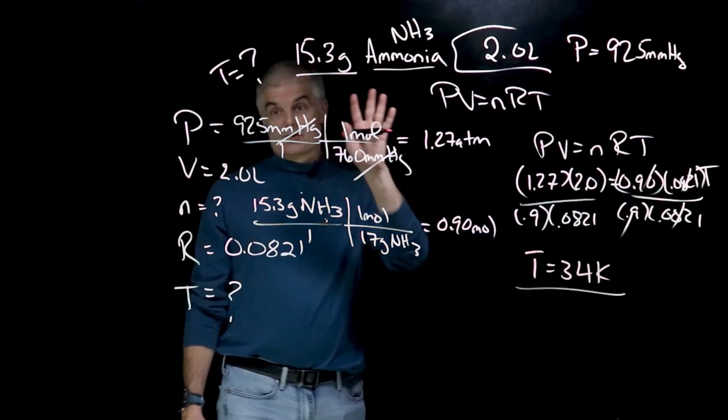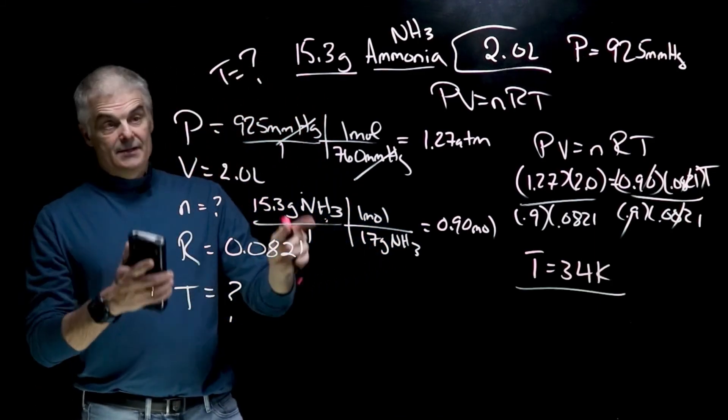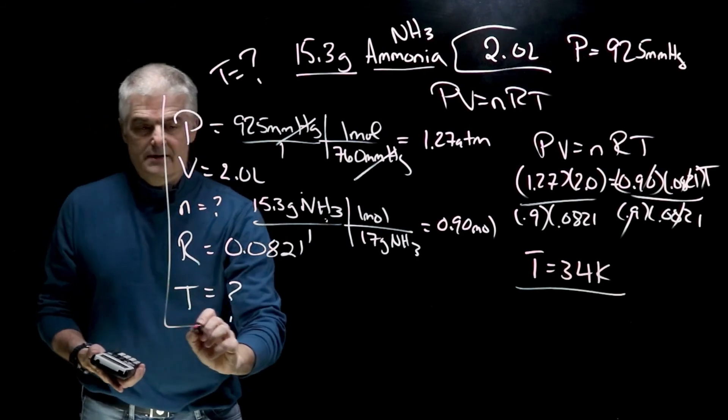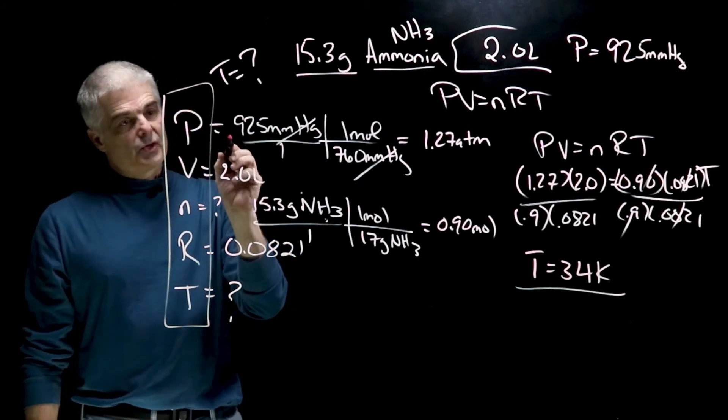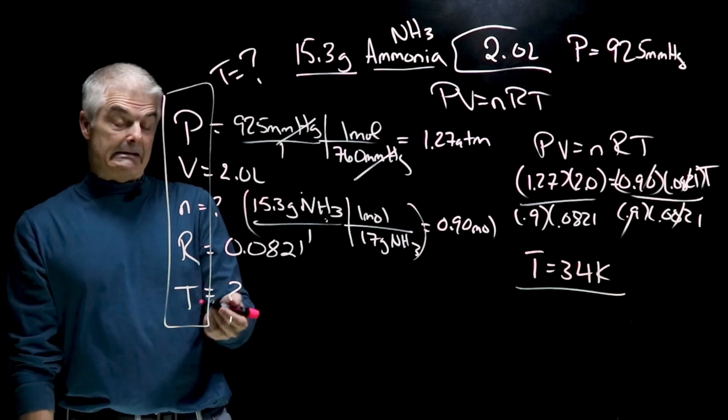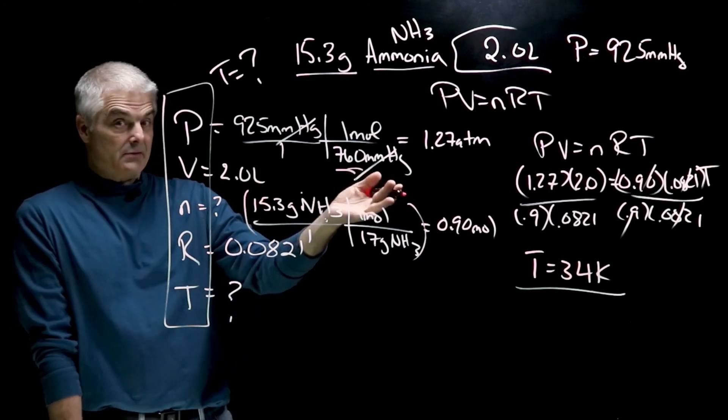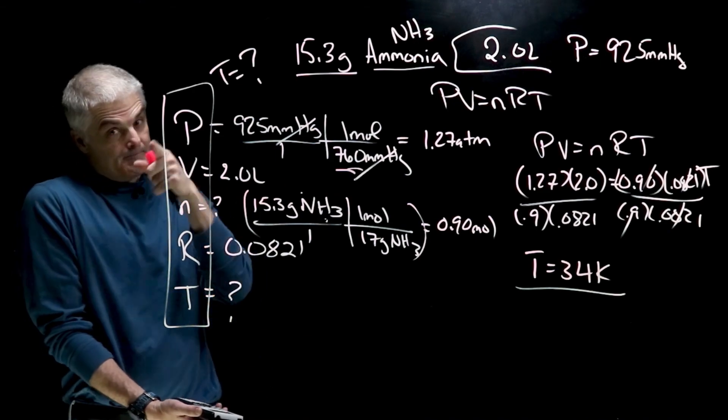So examples on how to do ideal gas law problems in class. You're going to do some more. But basically PV equals NRT. You're going to have to solve for some. Some of them are going to be a little tricky like this N where you've got to convert with some moles or something like that. Temperature is always in Kelvin and the pressures or something. They may have to be converted to atmospheres, but it's not that hard. See you in class.